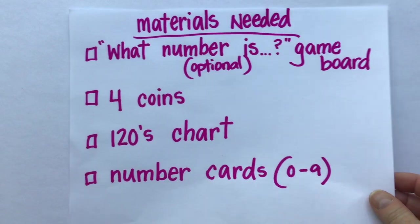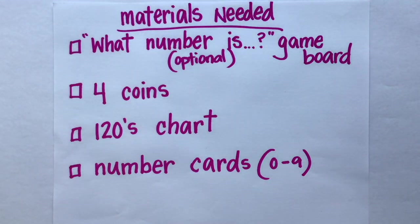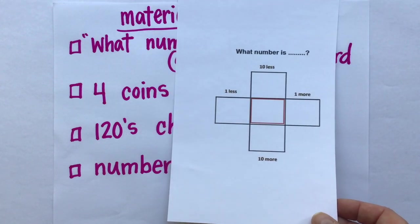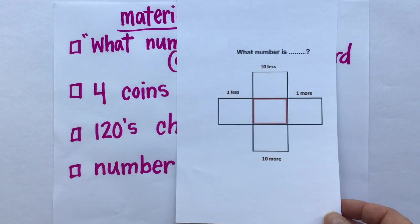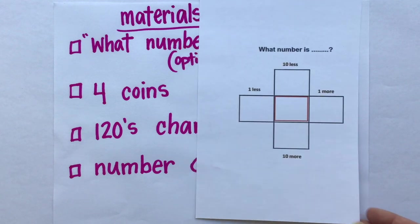I'm going to need a few things for today's lesson. First, we're going to be using a game board for our game. The game is called What Number Is, and this is the game board. I've attached it to today's lesson, but it's really easy just to make your own.